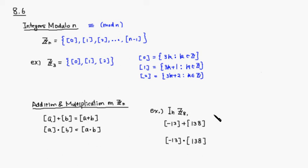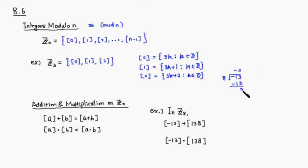Let's do a simple example in Z mod 8. We want to compute the equivalence class represented by negative 13 plus equivalence class represented by 138. For negative 13 divided by 8: negative 2 gives negative 16, so the remainder is 3. That is, negative 13 equals 8 times negative 2 plus 3. So equivalence class represented by negative 13 is the same as equivalence class represented by 3.